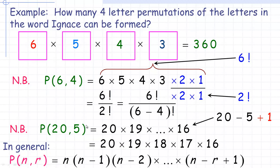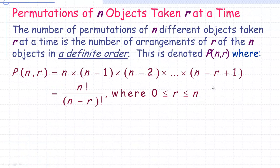In general, if you're permuting n objects taken r at a time, it's n times n minus one times n minus two, and so on, down to n minus r plus one. This is denoted n permute r, and it equals n factorial over (n minus r) factorial. Notice what's in the denominator — it's the factorial of the difference between n and r.